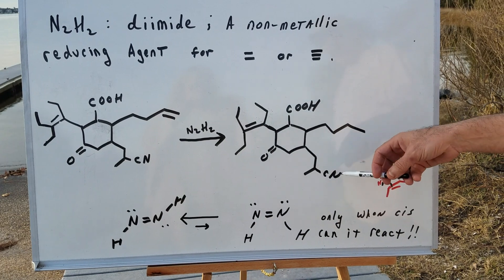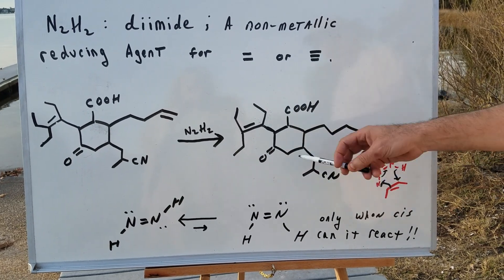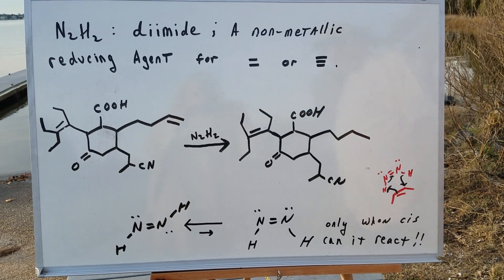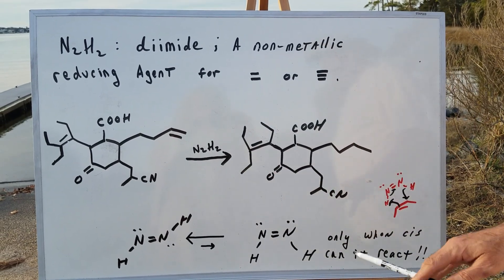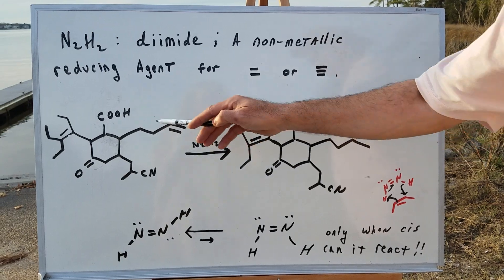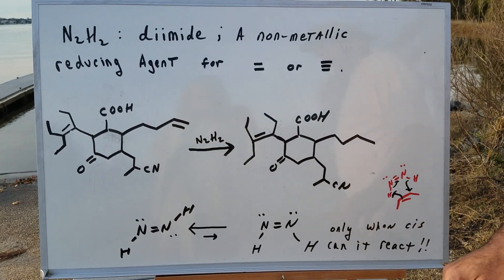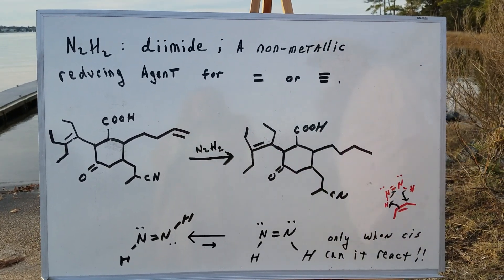And notice, I don't change any of the other stereochemistry. I don't do anything to the other functional groups. So, as you can see, if you ever want to add H's, especially if there's more than one double bond, and you want to go to the less substituted, we would use diimide.